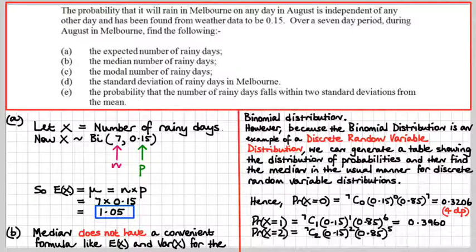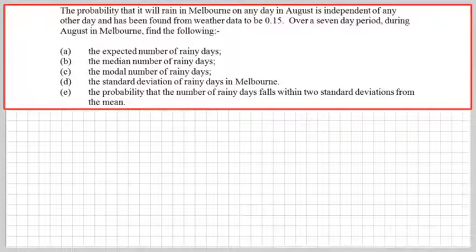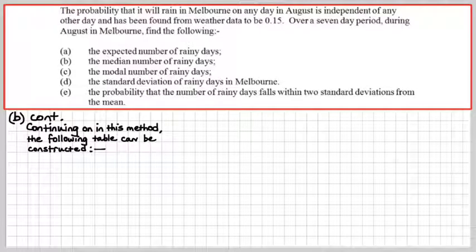Similarly for X equals 2, it's 0.2097. The probability that X equals 3 would be 0.0617. This is how we generate the values of the probability for our table. Continuing on with this method, the following table can be constructed.